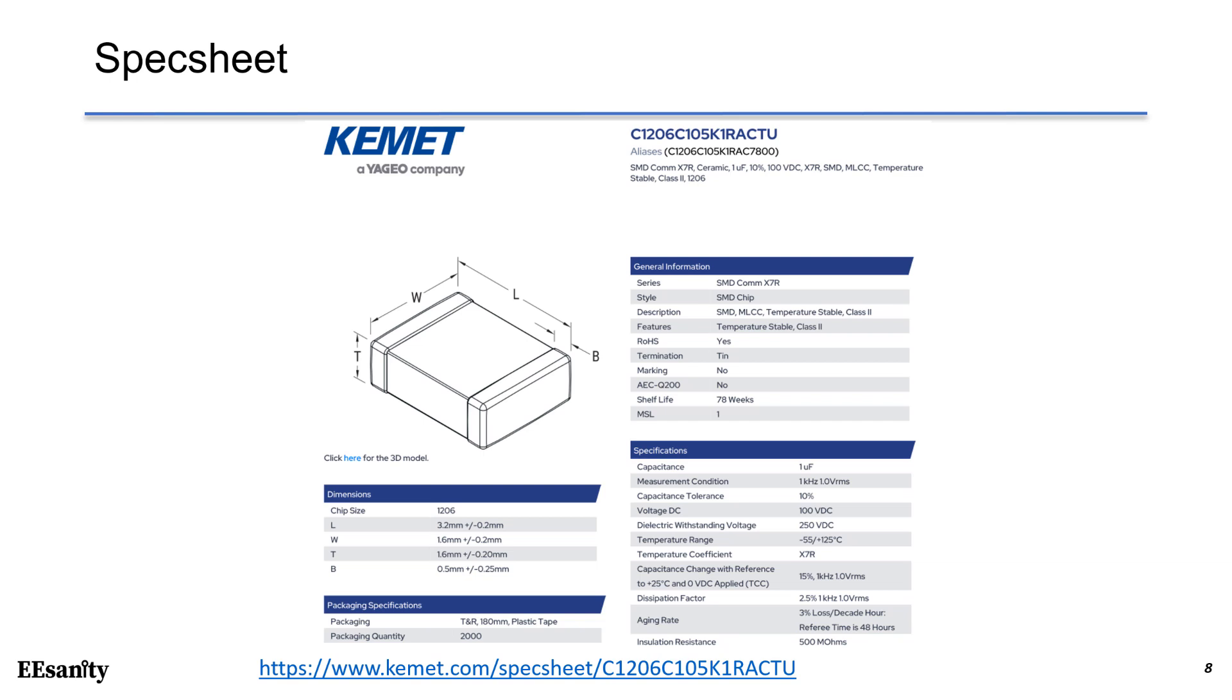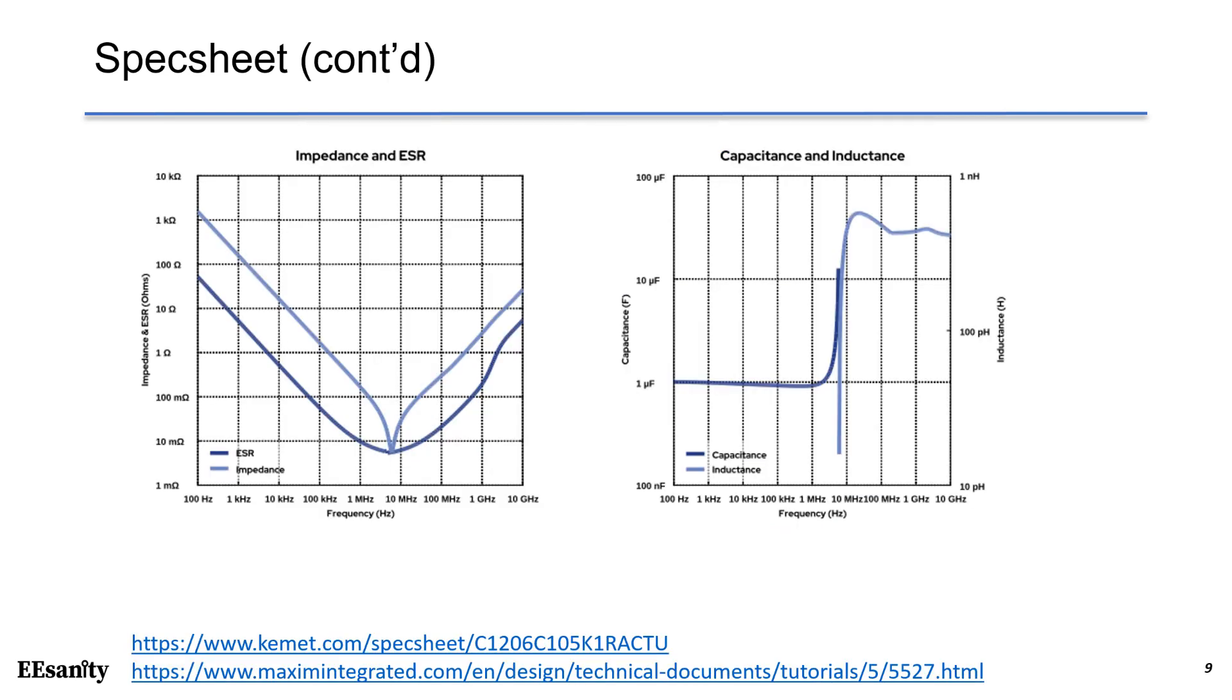Here is the manufacturer part number. This is the dimension and the package specifications. On the right hand side, we can see the general information and specifications. The capacitance is 1 microfarad. You can see the measured condition, capacitance tolerance, voltage in DC, dielectric withstanding voltage, temperature range, temperature coefficient, capacitance change, dissipation factor, aging rate, and insulation resistance. This is one of the captures which is very important from the specsheet.